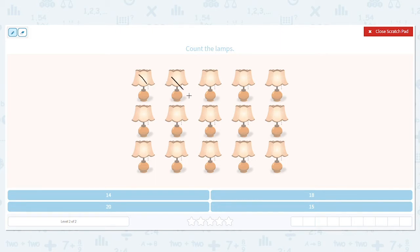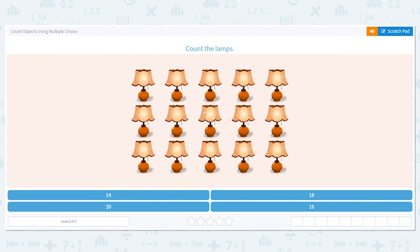One, two, three, four, five, six, seven, eight, nine, ten, eleven, twelve, thirteen, fourteen, fifteen. So we have 15 lamps. So I need to pick 15 from the bottom, and there it is.